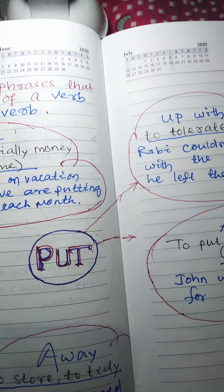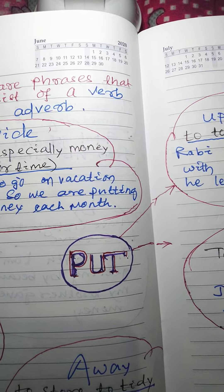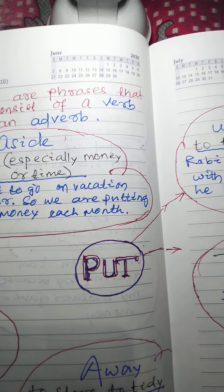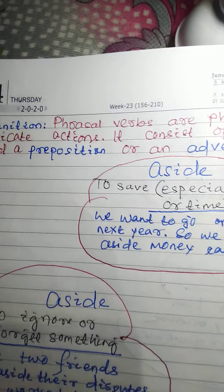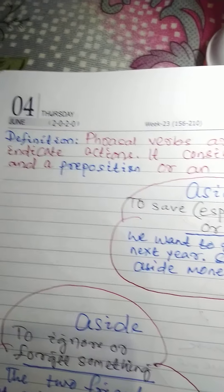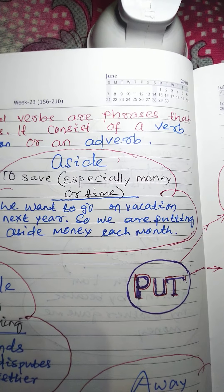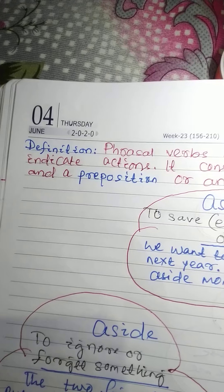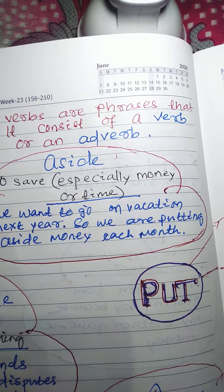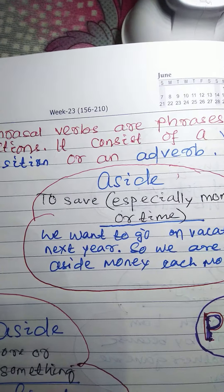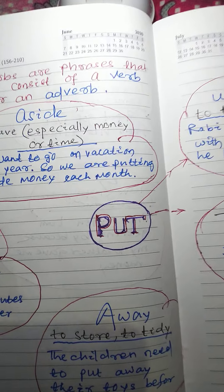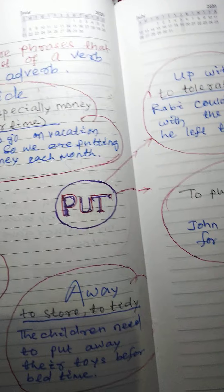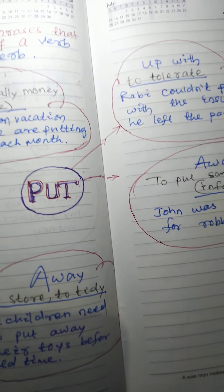Hello everyone, welcome to this video. In this video we are going to study about phrasal verbs, which are an important topic of English grammar. First of all, the definition: phrasal verbs are phrases that indicate actions. They consist of a verb and a preposition or an adverb. So let's learn some phrasal verbs that are related to the verb 'put'.